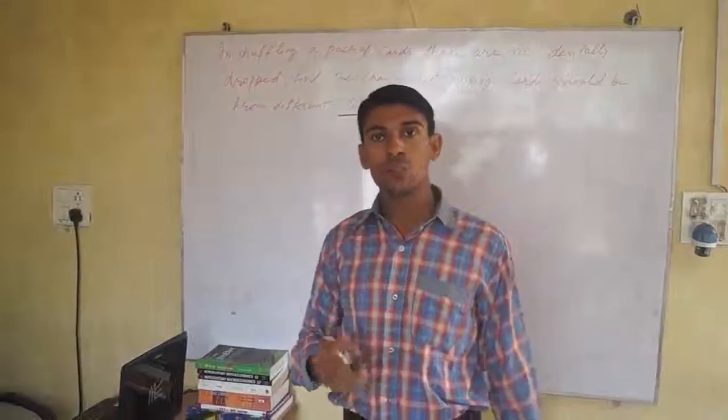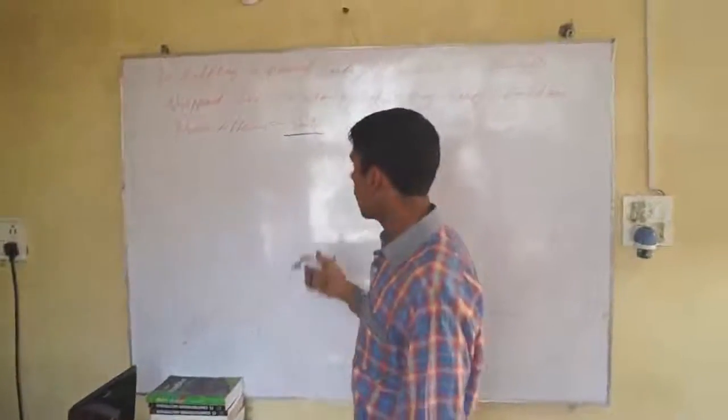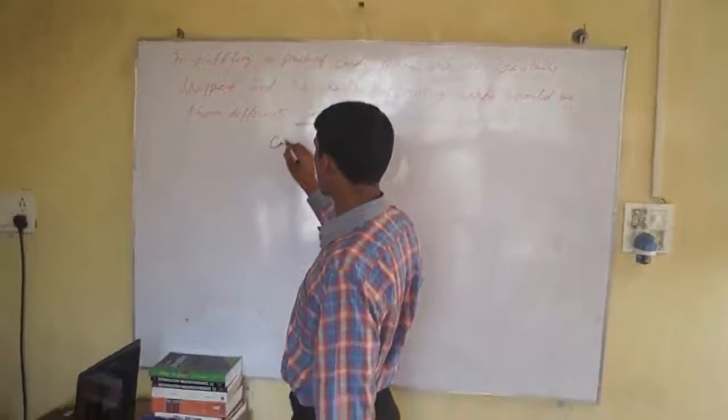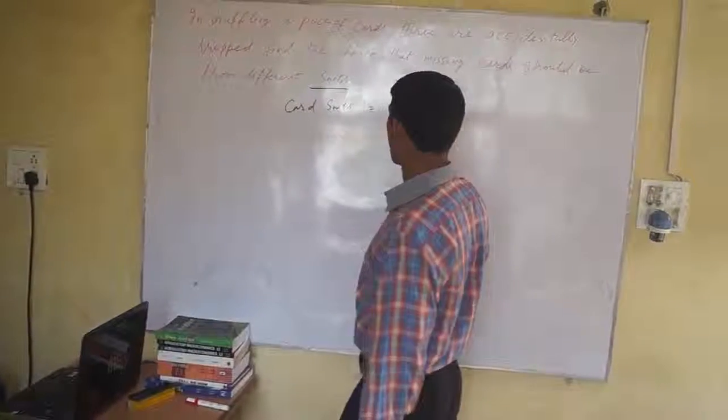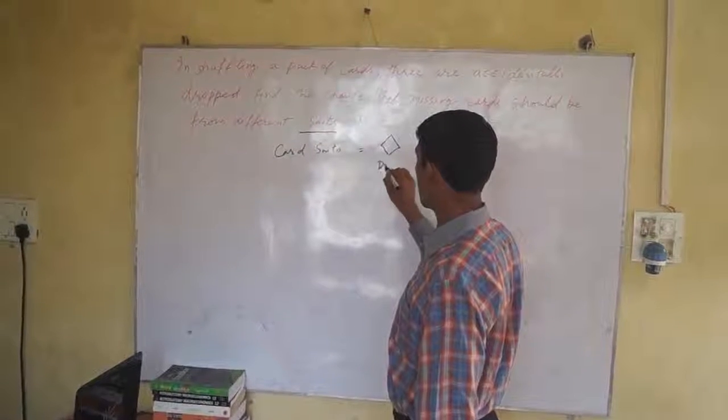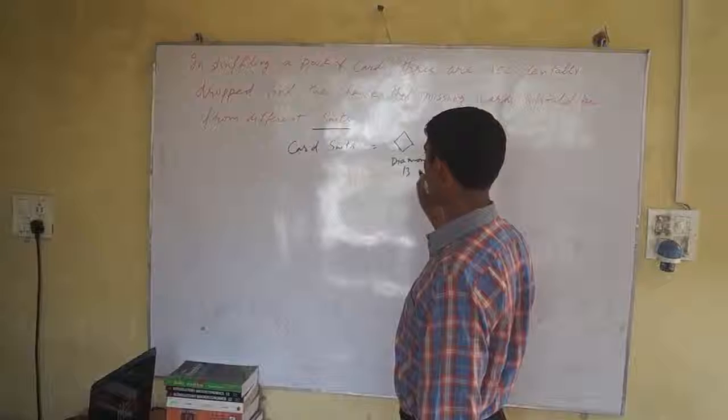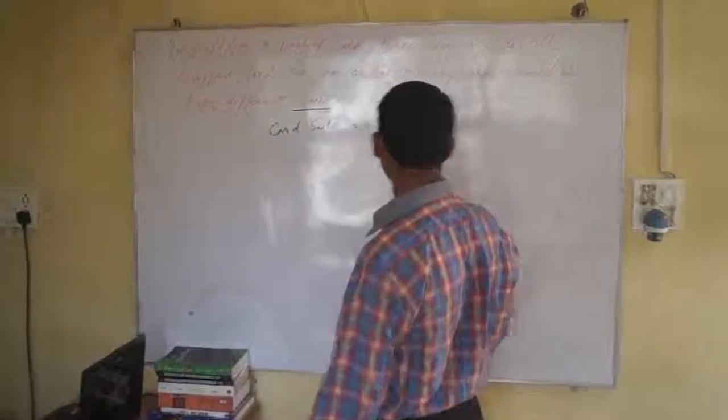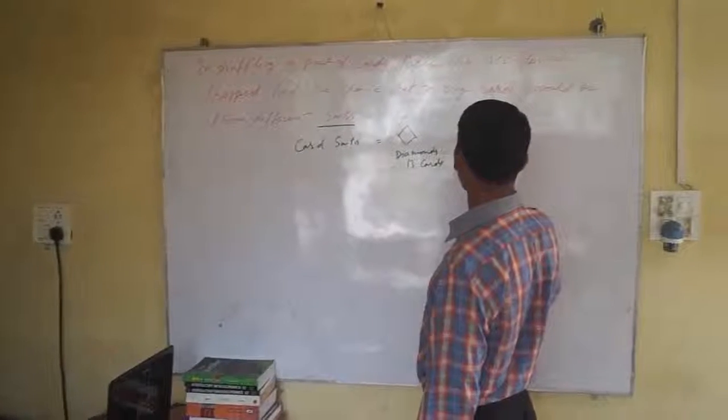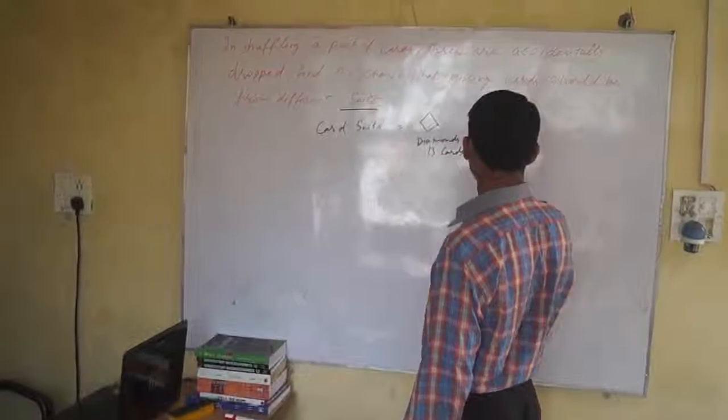First, we understand what is a suit. Card suits: first is diamonds. These are 13 cards. Second is spades. Spades, these are 13 cards.